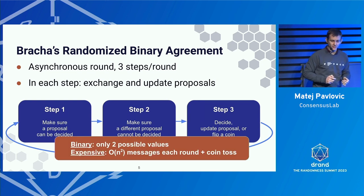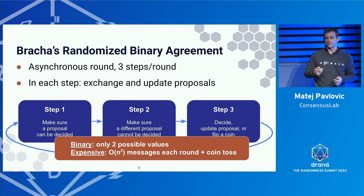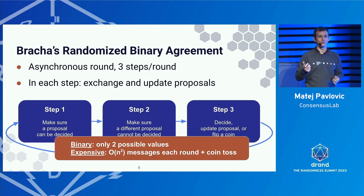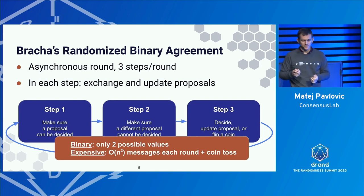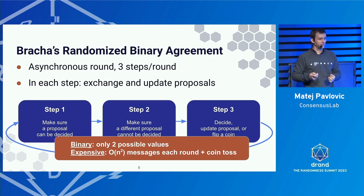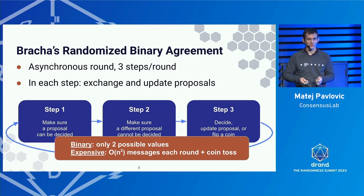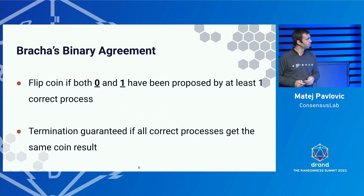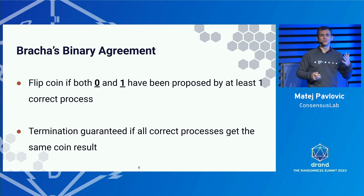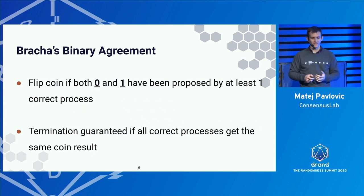The problem with this approach is that it's just binary consensus — only two possible values, go left or go right. And it's expensive: each round involves an N-squared message exchange, and potentially a coin toss, which is also an expensive operation. So how do we tackle these issues to get to a more efficient algorithm? This is really just high-level ideas because it's fresh work in progress.